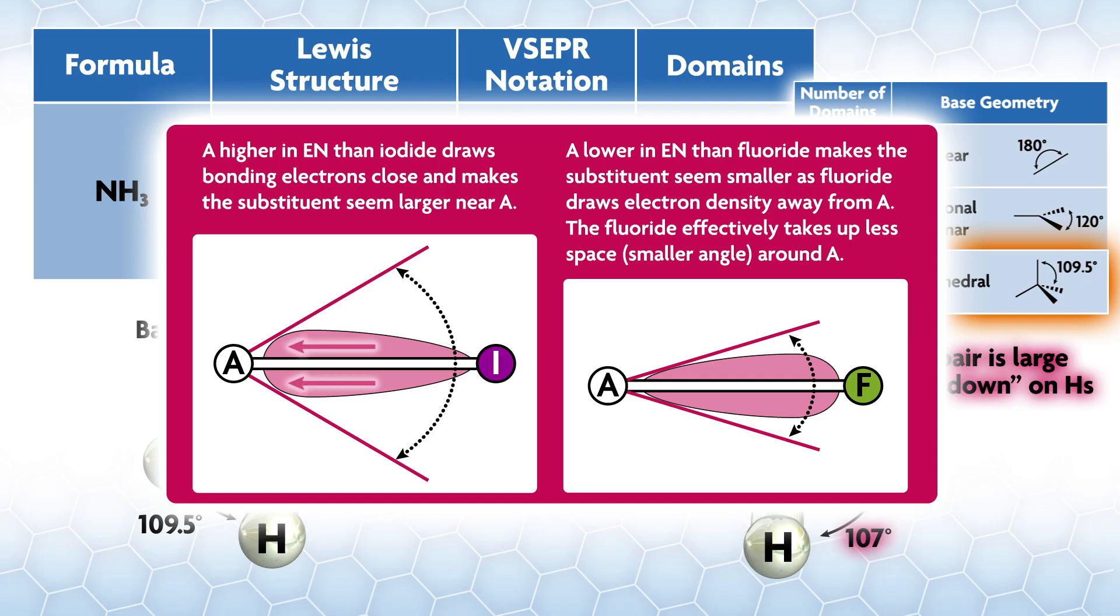Compare low electronegativity iodine on a central atom versus high electronegativity fluorine, and let's assume the central atom is a modest electronegativity. The domain of the bond to iodine will be larger towards the high electronegativity central atom because it can better support the electron density. As a result, the domain near the central atom takes up a larger angle of space.